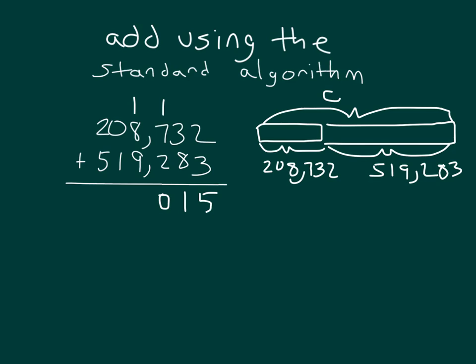Within the thousands place, we have one thousand, eight thousand, nine thousands, equaling eighteen thousands. We'll place the eight and regroup the one. That's two ten-thousands, and then seven hundred thousands. So C equals seven hundred twenty-eight thousand fifteen.